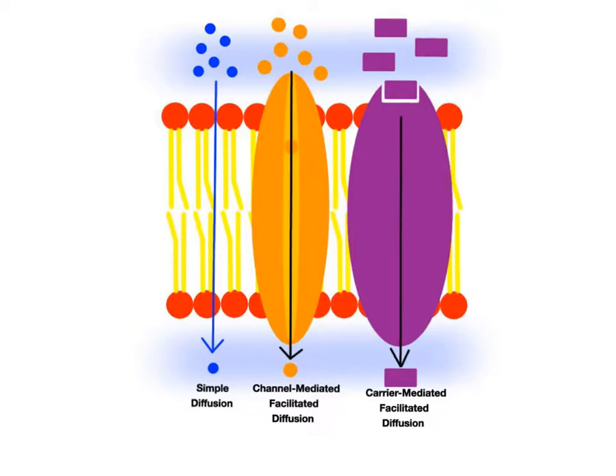None of them require chemical energy in the form of ATP to carry out their transport. They are all transporting chemicals down their concentration gradients, moving chemicals downhill from an area of higher concentration on one side of a cell membrane to an area of lower concentration on the other side of the membrane.